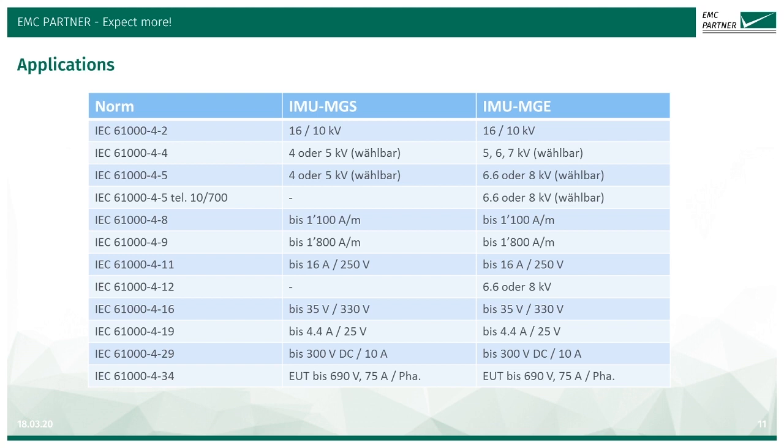Another unique feature of the IMU-MG series generators is the internal VARIAC, which enables the 61004-8 AC magnetic field testing and also the DIPS testing for 61004-11.